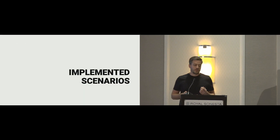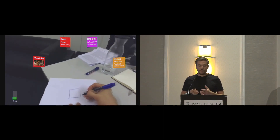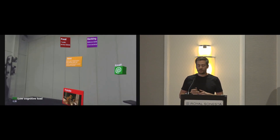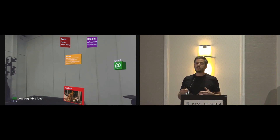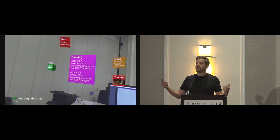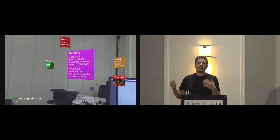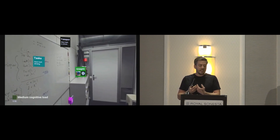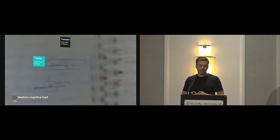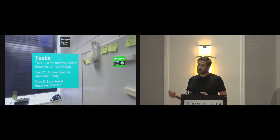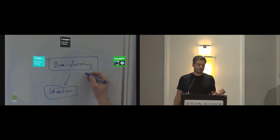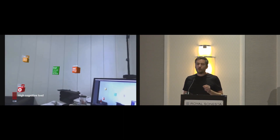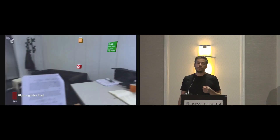We implemented three scenarios. In the first, the user is doodling — a low cognitive load task — so more information is available and the user has access to all the information because they can handle it cognitively. Second is brainstorming, measured as a medium cognitive load activity, where we show less but more task-relevant information, such as inspirational images or the current tasks. The third is reading a difficult scientific paper, where we show only minimal information to not overload users.